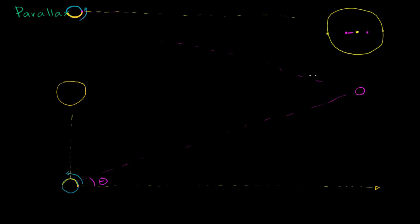So what just happened here? It looks like, relative to straight up — and we're picking times of year and times of day where straight up is the same direction, looking in the same direction of the universe — the position of that star has actually shifted. Let's say this is the middle of summer and this is the middle of winter. When we look at this star in the summer, it's going to be over here on one side. When we look at this star in the winter, it is going to be on the other side. For any star, especially stars in the same plane as the solar system, you can find two points in the year where that star is at a maximum distance from center.